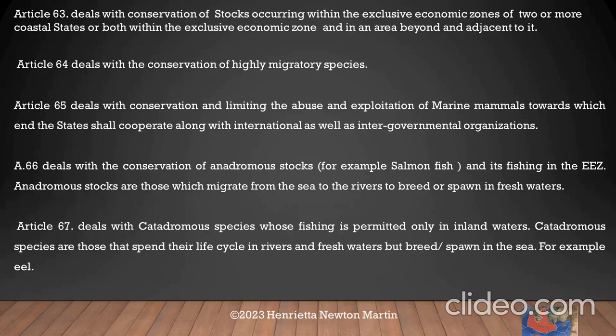Article 63 talks about conservation of stocks. Article 64 talks about conservation of highly migratory species — there are certain fish that migrate, for example salmon. Article 66 deals with anadromous stocks. These are marine animals that, for a particular season, live in fresh water but lay their eggs in salty water. Conversely, some fish live in salty waters but prefer to spawn or lay their eggs in fresh waters.